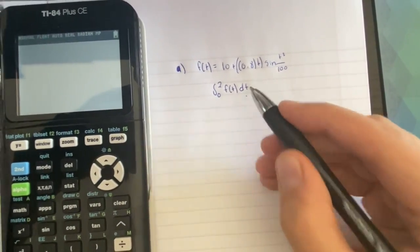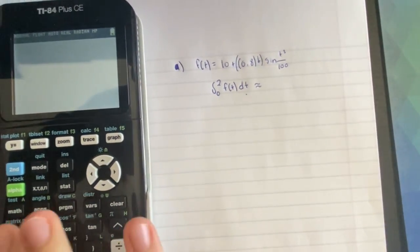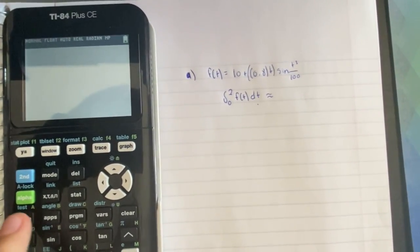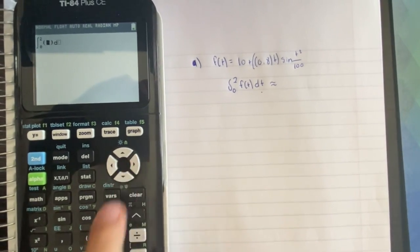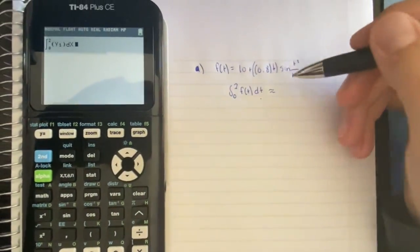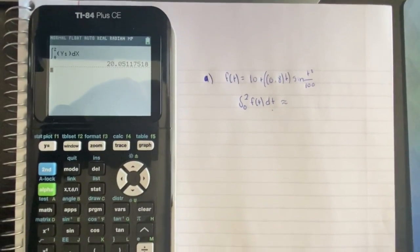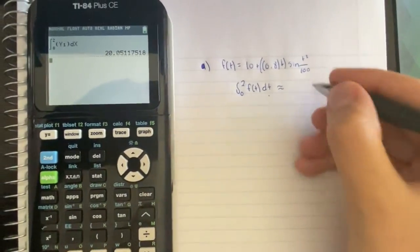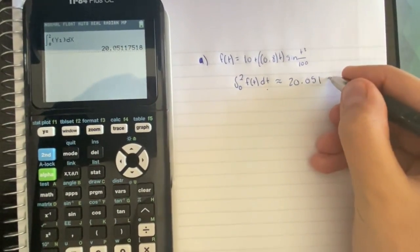If we plug this into the calculator — I already stored the equation as y1 — we can just go math 9, and then the integral from zero to two of y1. Instead of dt, I'm writing dx because that's the variable I chose to use in the calculator. We press enter, and that's how many pounds of bananas are removed during the first two hours. The answer is 20.051 pounds, rounded to three decimal places.